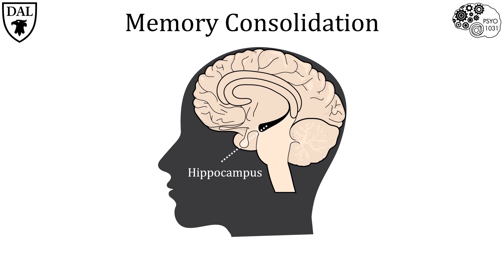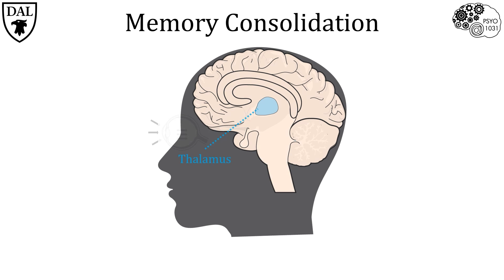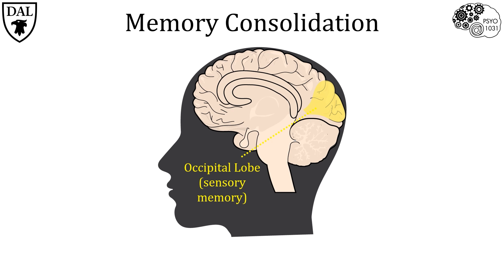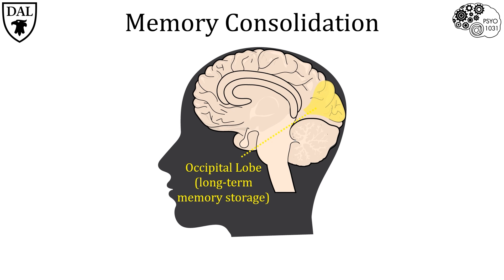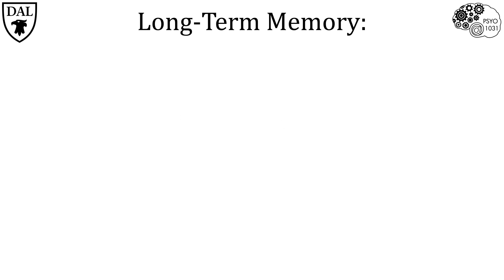Let's look at a simple example of how the hippocampus interacts with the cortex in memory processing. Visual information processed by the eye is sent to the thalamus, then to the corresponding visual cortex in the occipital lobe. That information can then be sent to the hippocampus for consolidation, and then sent back from the hippocampus to the cortex for long-term storage. This is why our visual cortex is activated both when experiencing something and when we think about it in its absence.